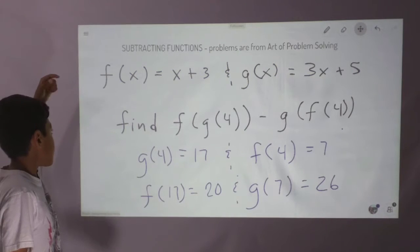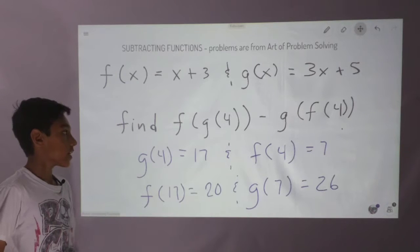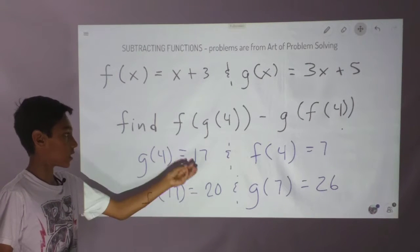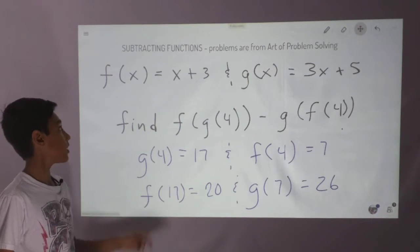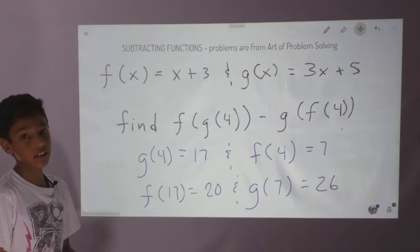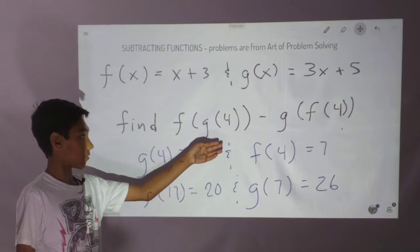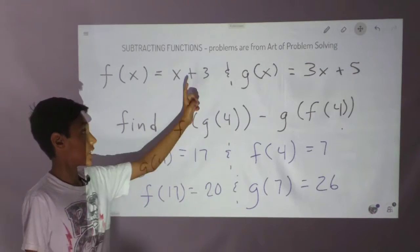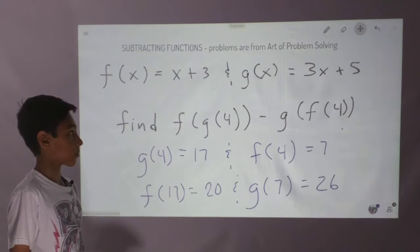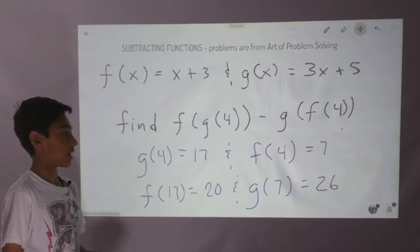So we had these functions, and we were actually finding this. What we needed to do with g of 4 was put it into the function f of x, and the same thing with this. And how did we get g of 4? We got g of 4 because we needed to plug in 4 for x in this equation. So it's the same thing as replacing the x with the 4, and then we multiplied and added.